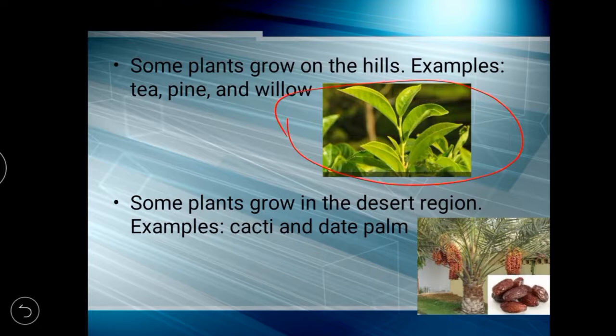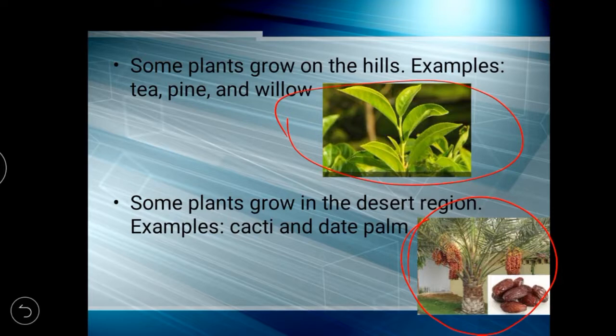Some plants grow in the desert region. Examples are cactus and date palms. This is the date palm — we eat dates in our day-to-day life on some occasions. Dates grow in the desert region.